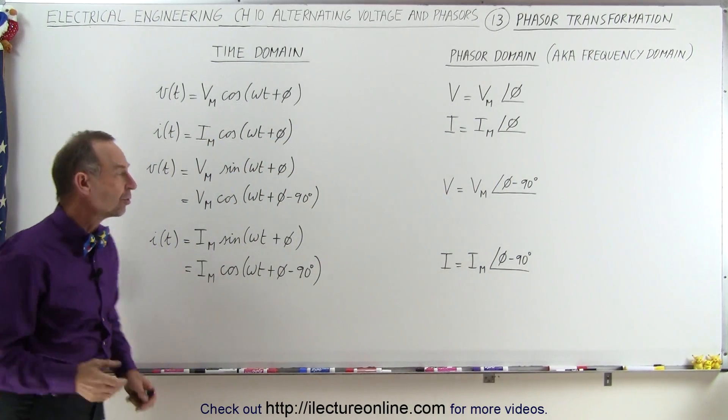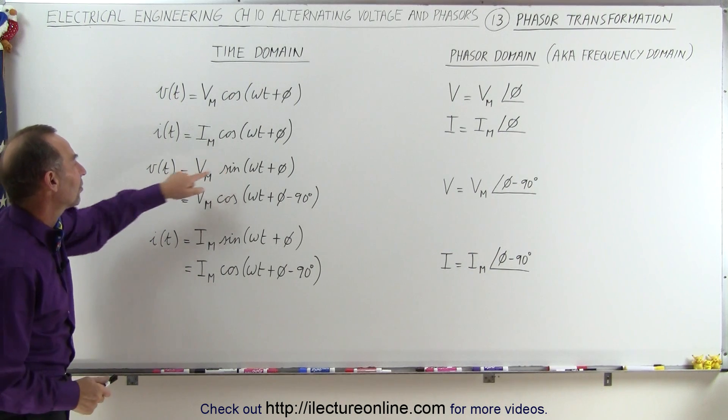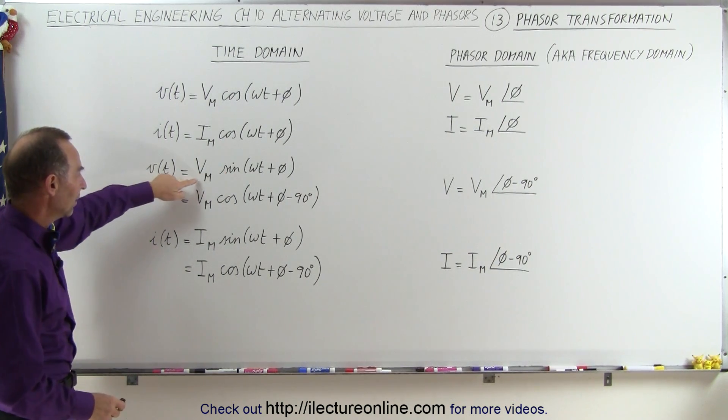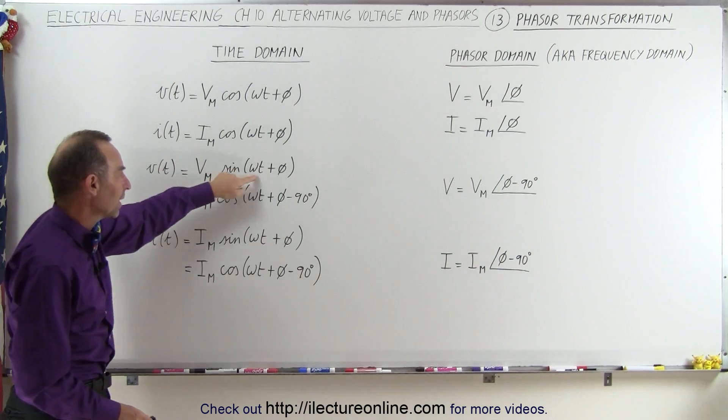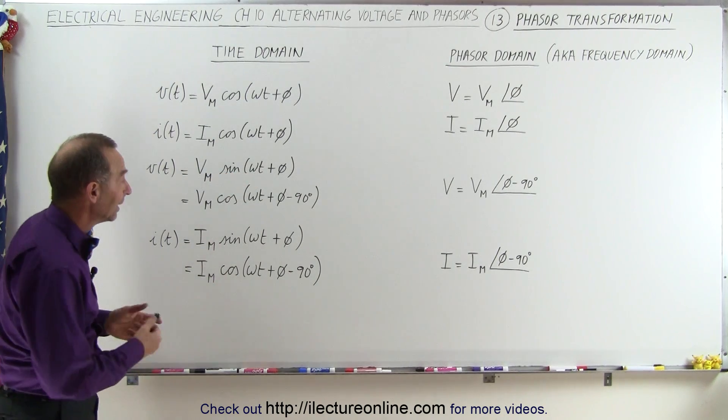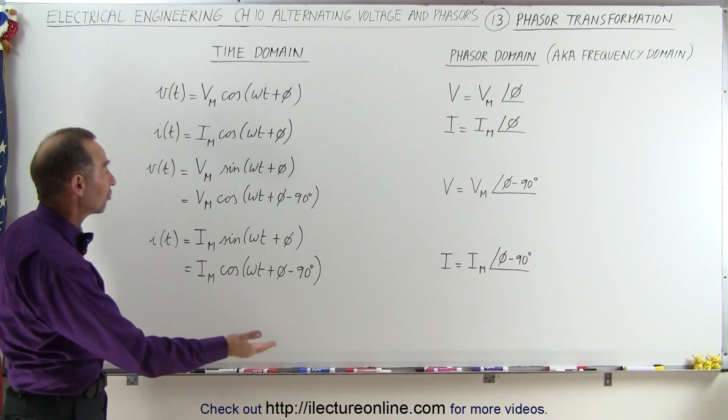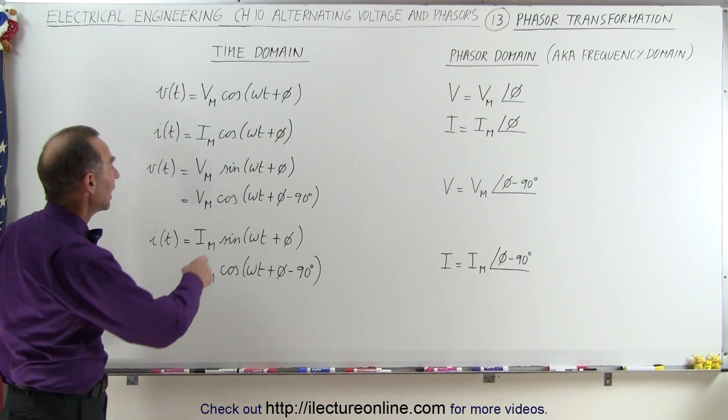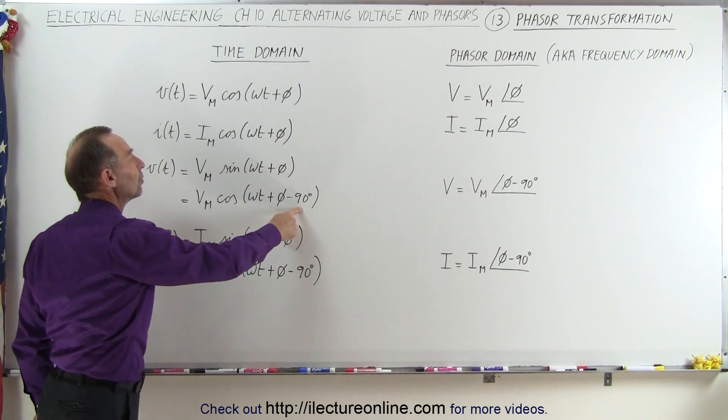But what if the function is described in terms of the sine instead of the cosine? So the voltage as a function of time is the maximum voltage times the sine of omega t plus some phase angle. Then it would be better if we transform it to the cosine function, and we do that via the minus 90 degree shift.